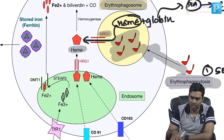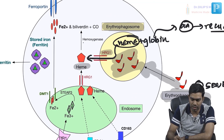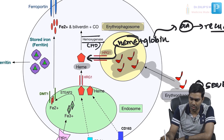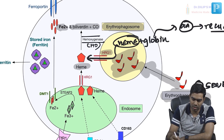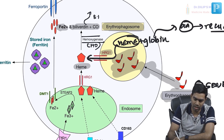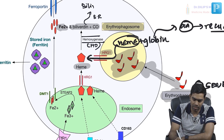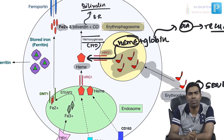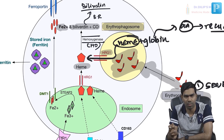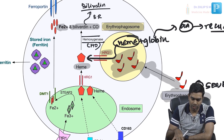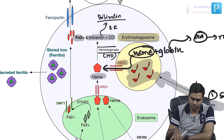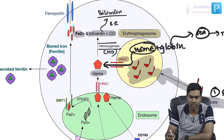Once heme is outside, it follows the same principle: it is acted upon by heme oxygenase, which converts it into Fe2+, biliverdin, and carbon monoxide. Biliverdin, under the action of biliverdin reductase, forms bilirubin, which is further processed by the liver. The Fe2+ formed here enters the intracellular iron pool.